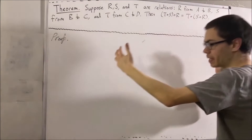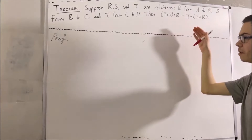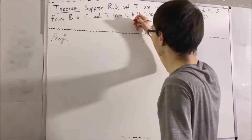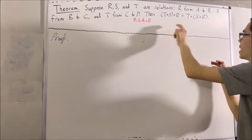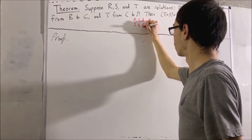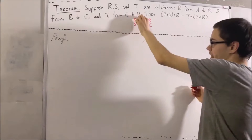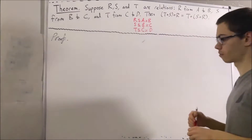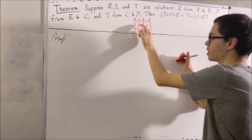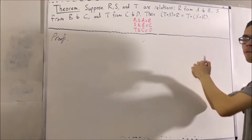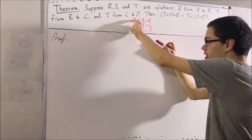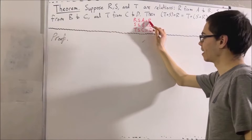Before we begin this proof, I would like to write some notes down. First of all, we're given that r is a relation from A to B. We're also given that s is a relation from B to C, and t is a relation from C to D. Notice that r is a relation from A to B and s is a relation from B to C. From composition of relations, this means that s ∘ r is a relation from A to C.